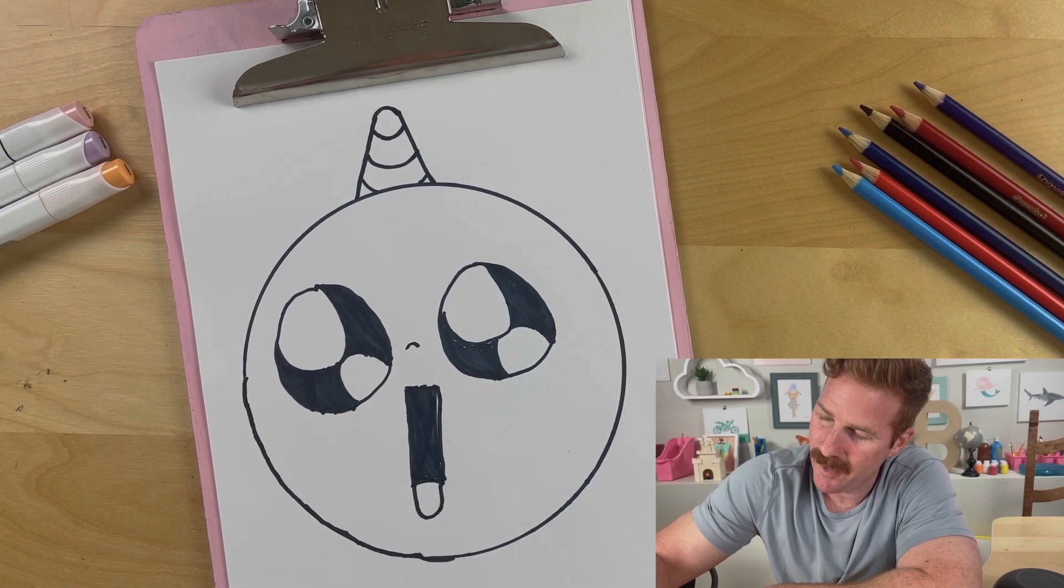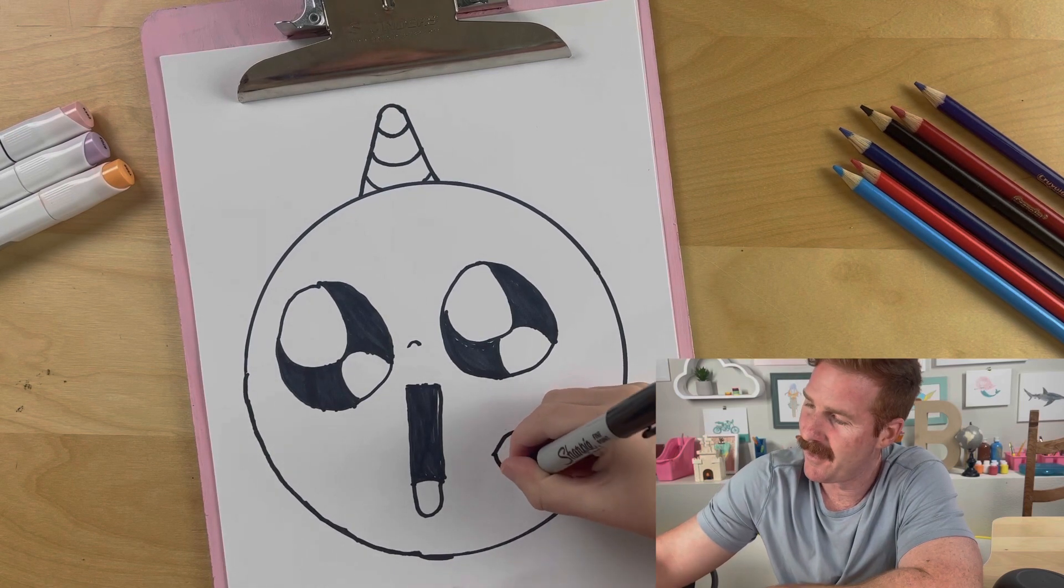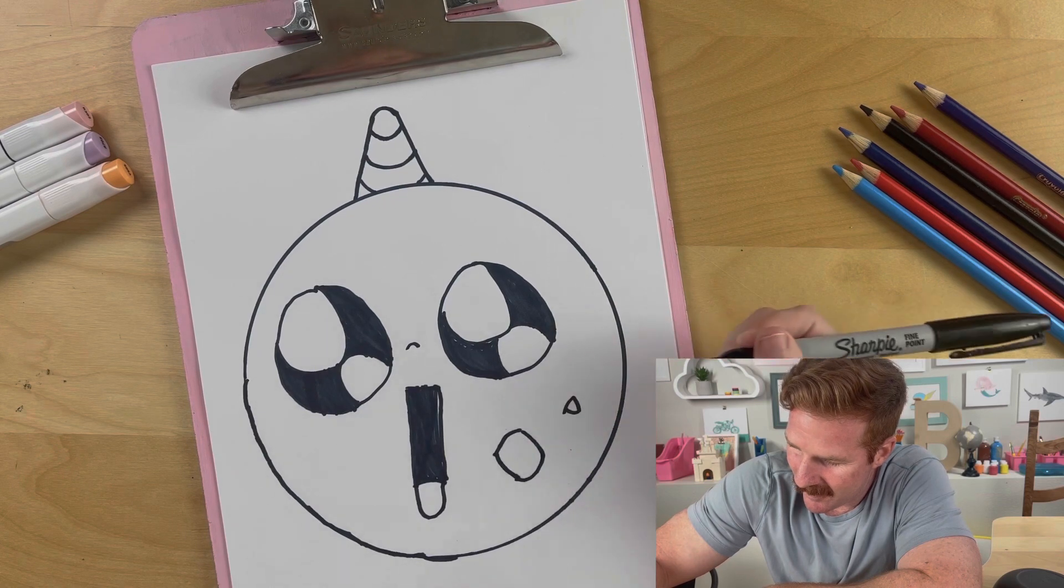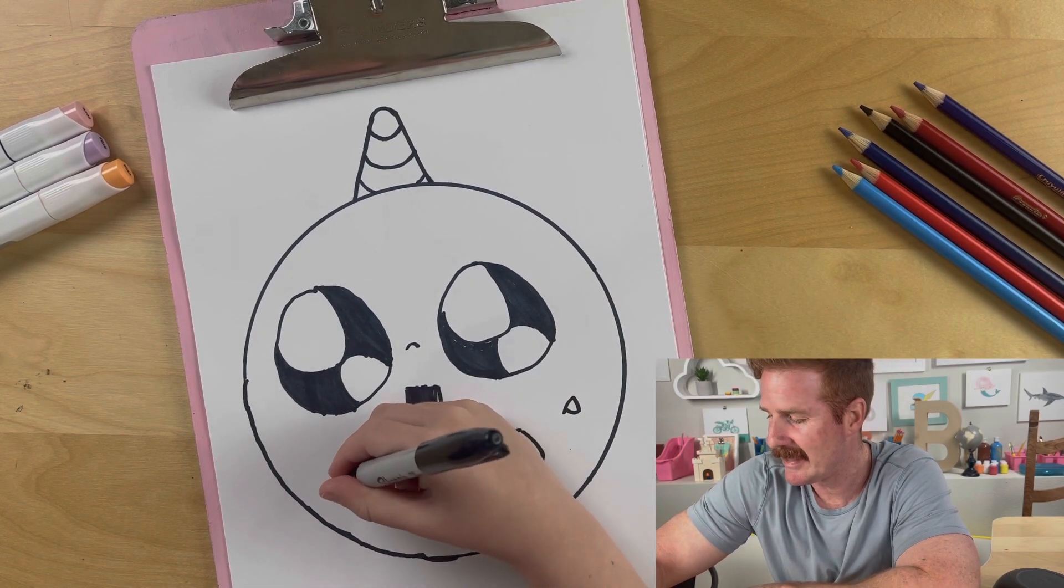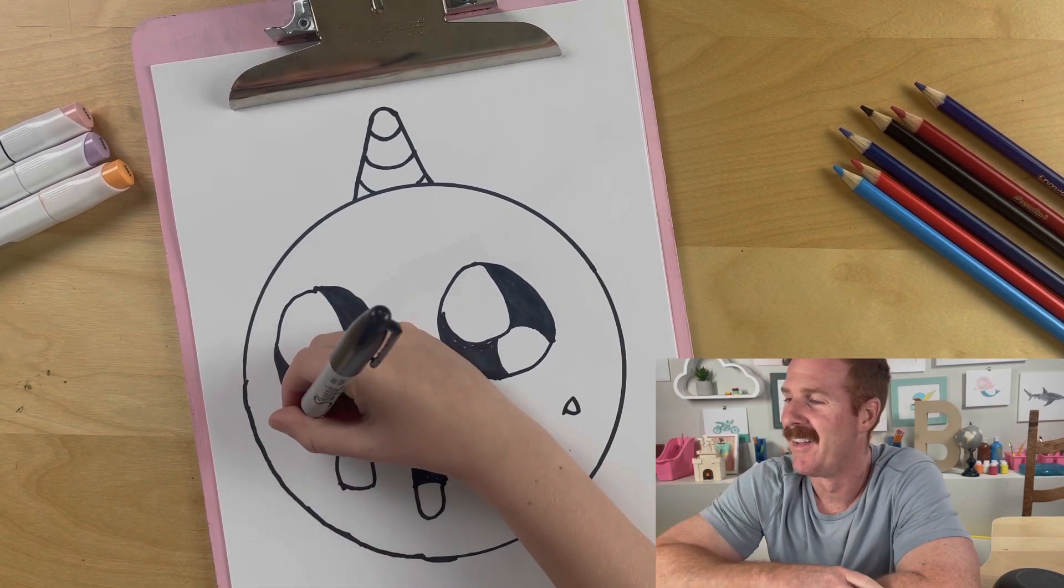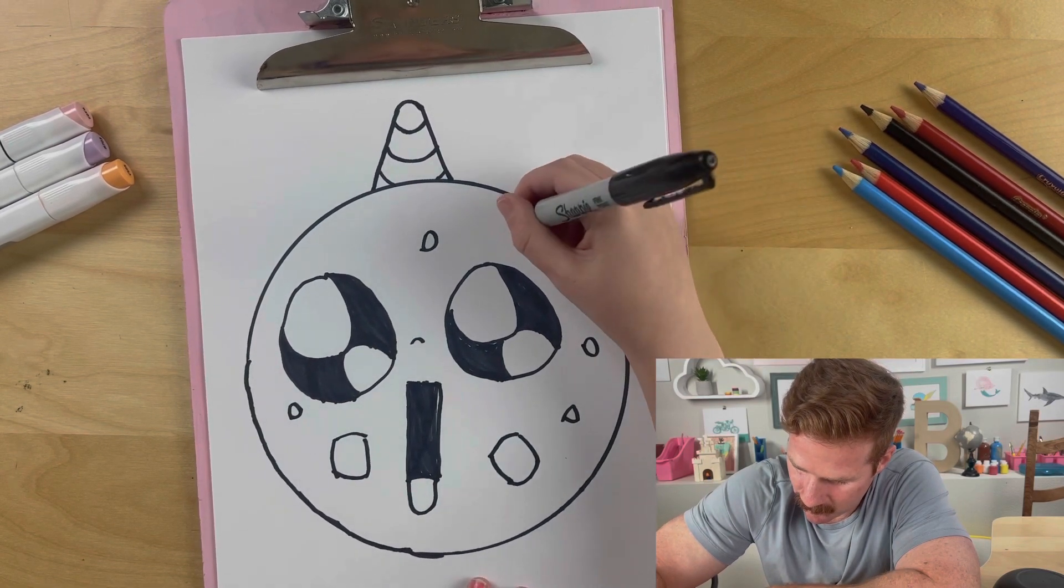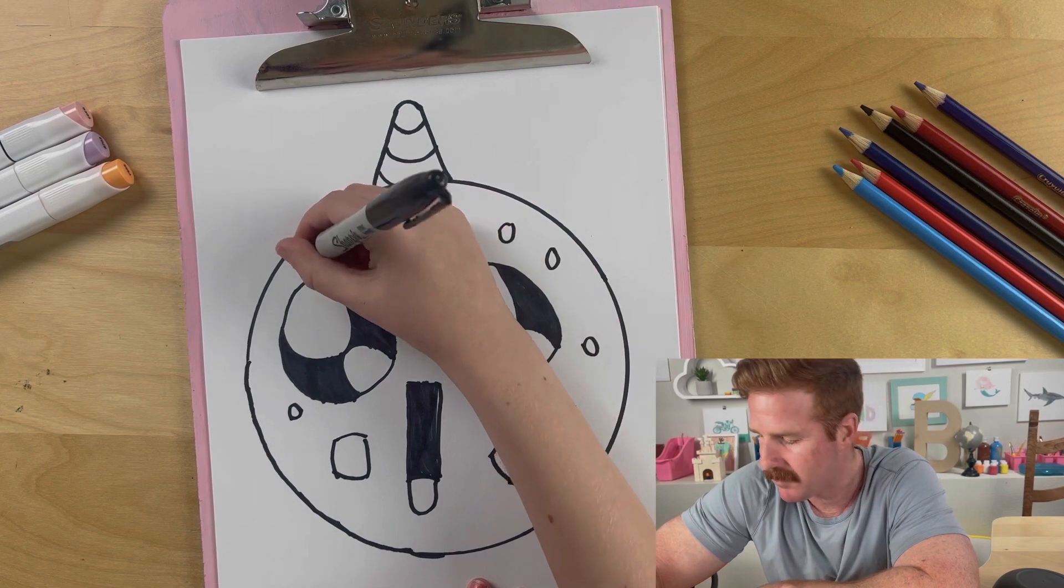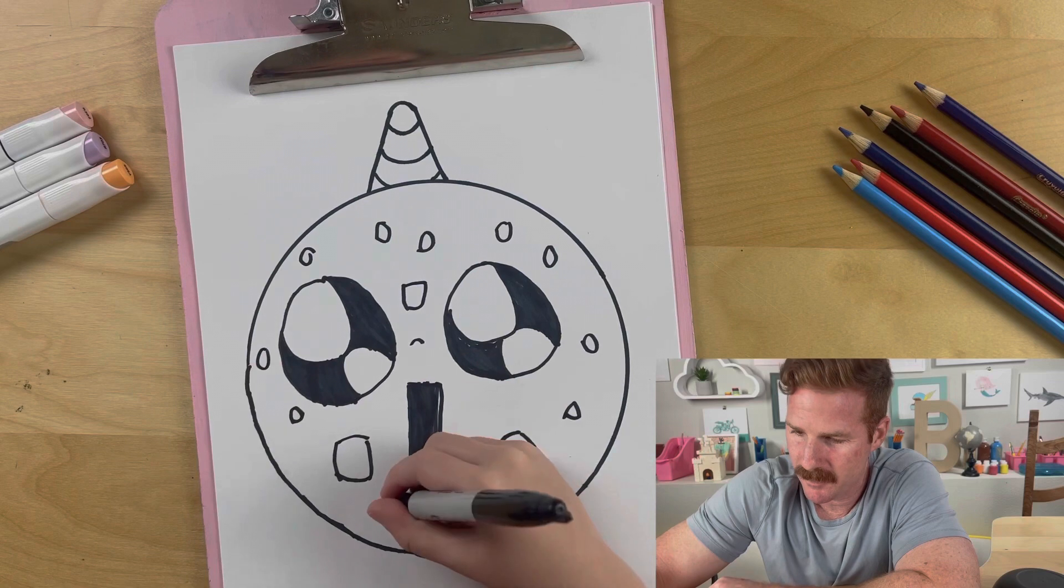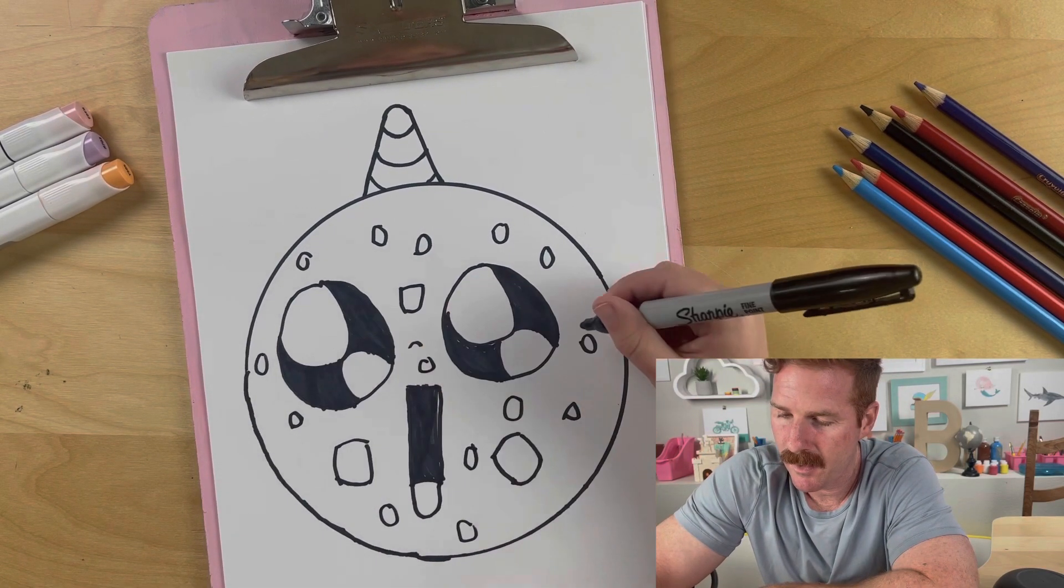Now you can add some sprinkles. Just draw little round squares, or some triangles. Like that. Or some circles, cause that's easier. I'm gonna do it. Oh, this is making my mouth so watery.